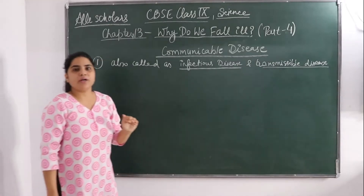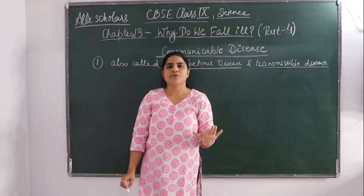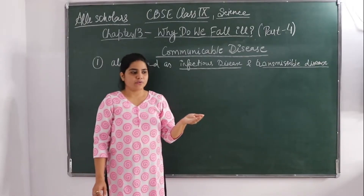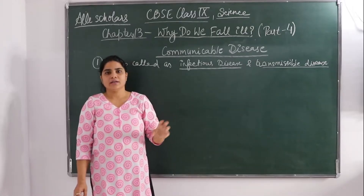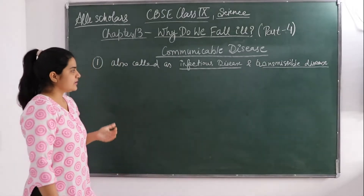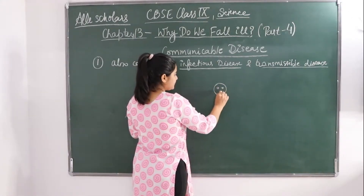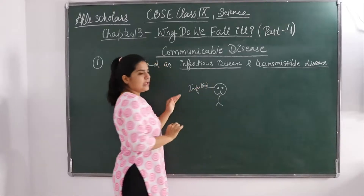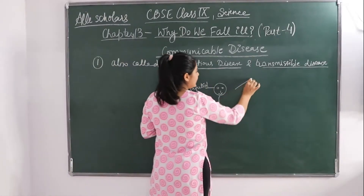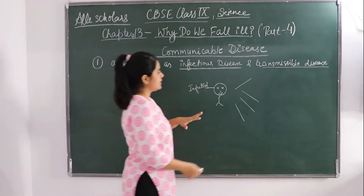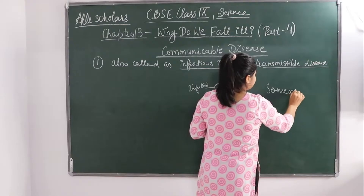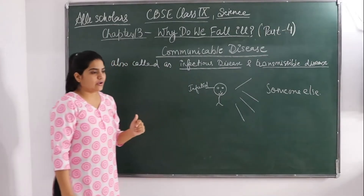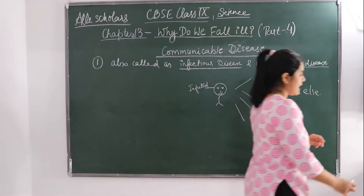This infectious disease is spread from an infected person. Suppose somebody is infected with some kind of disease — from that infected person, it is being transmitted to someone else in a variety of ways. Such a disease is called a communicable disease.